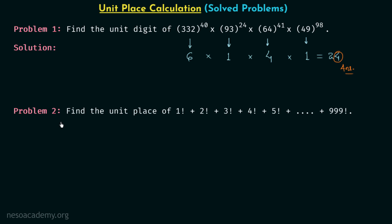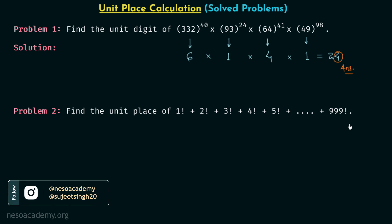Now we move on to problem number two. In this problem we are required to find the unit place of 1 factorial plus 2 factorial plus 3 factorial plus 4 factorial, all the way up to 999 factorial. Before we look at the solution, please pause the video and try to find the answer on your own.